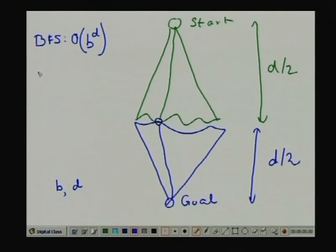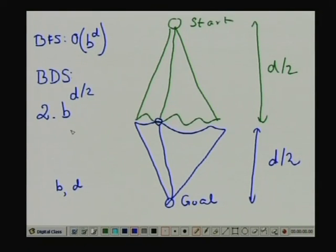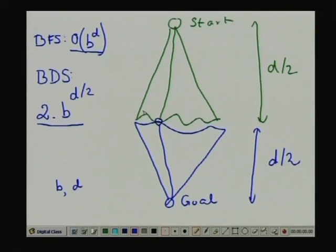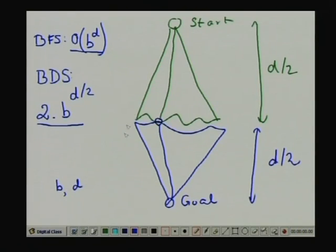The number of nodes expanded in bidirectional search is 2·b^(d/2), which is better than BFS's O(b^d). In the best case we get 2·b^(d/2) nodes. However, space complexity is also b^(d/2) because we must store the frontier of at least one search tree. Often what is done is breadth-first search in one direction and DFS in the other, but at least one tree requires a BFS-style frontier of order b^(d/2).